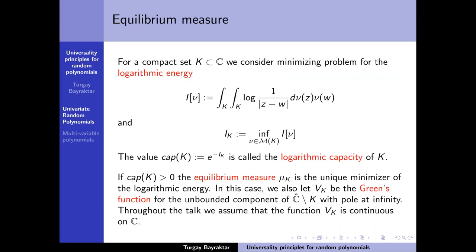To generalize this result, we start with a compact set in the complex plane, choose a good basis associated with this compact set, and then look at random linear combinations of these basis elements.